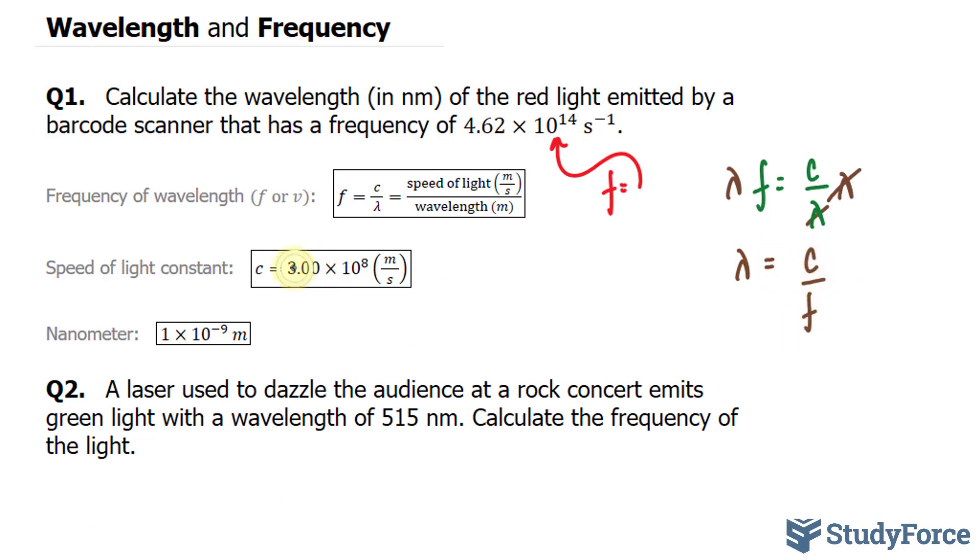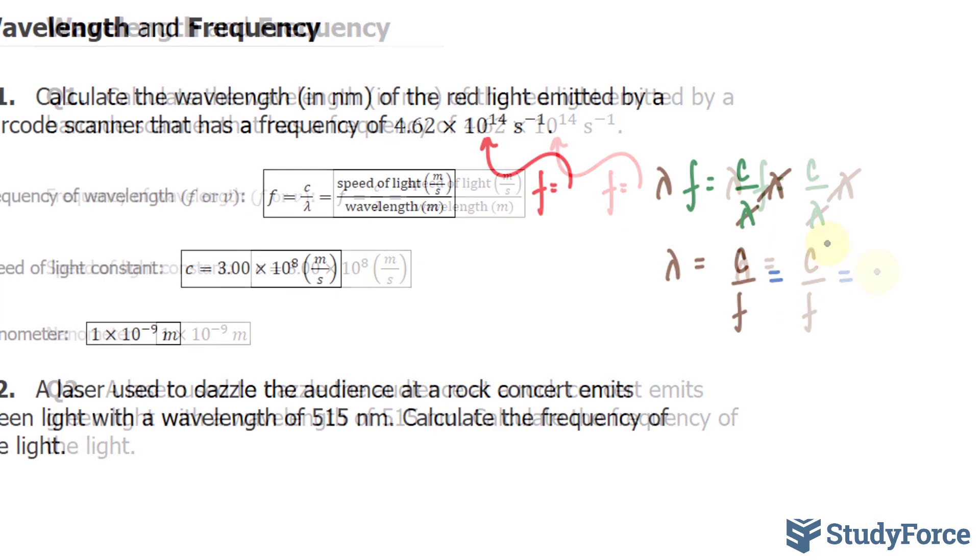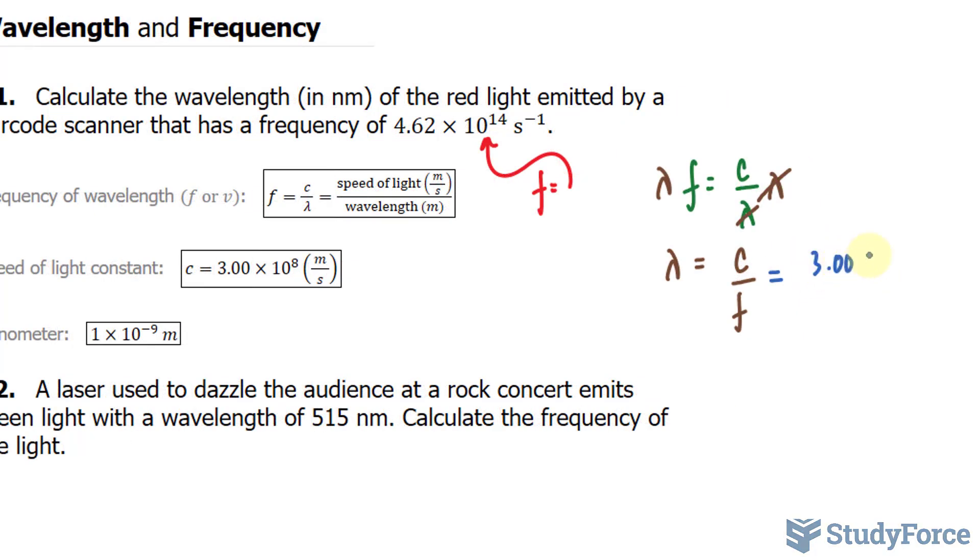Next, I'll substitute this number into c. So I have 3.00 times 10 to the power of 8 meters per second over the frequency of 4.62 times 10 to the power of 14. And this is per second. So what will happen is this seconds unit and this unit will cancel out, leaving us only with meters.